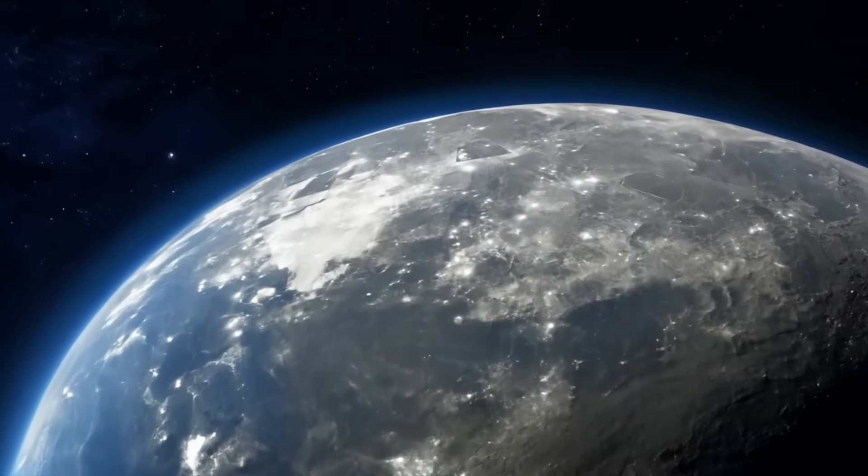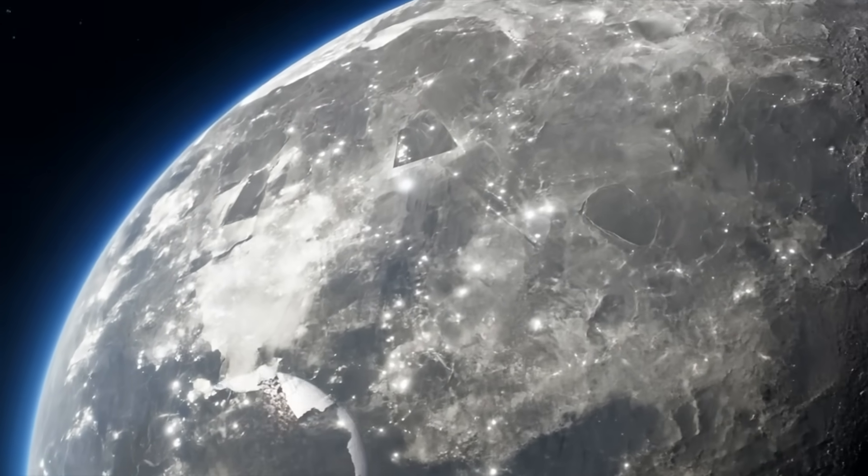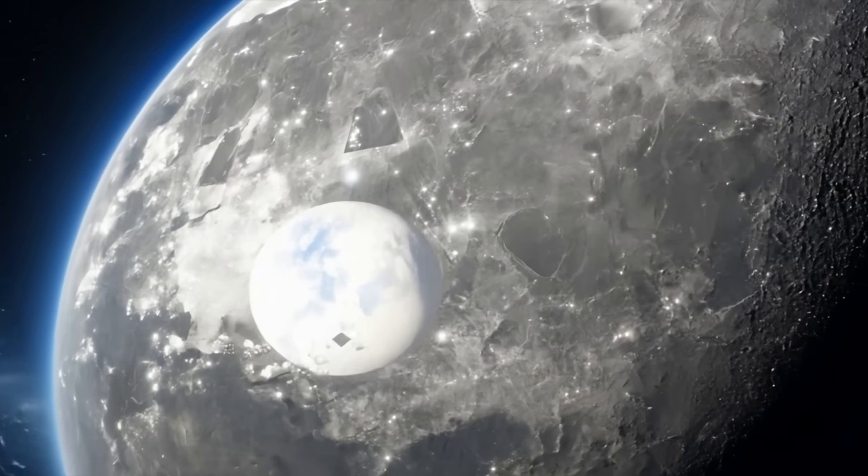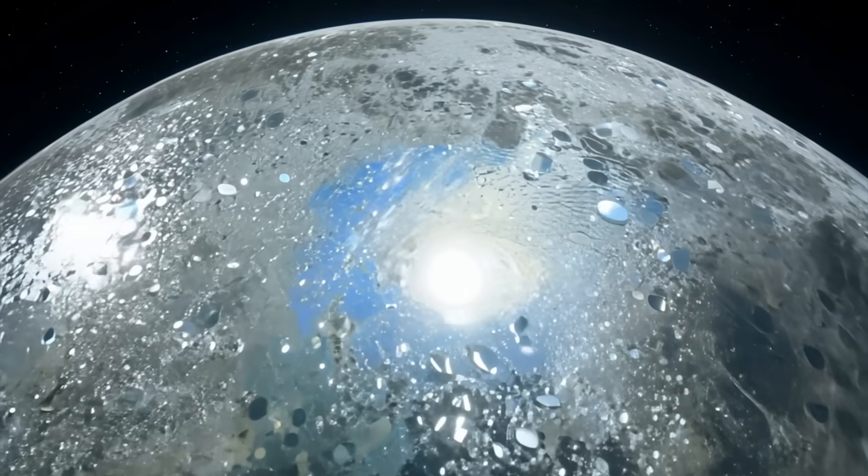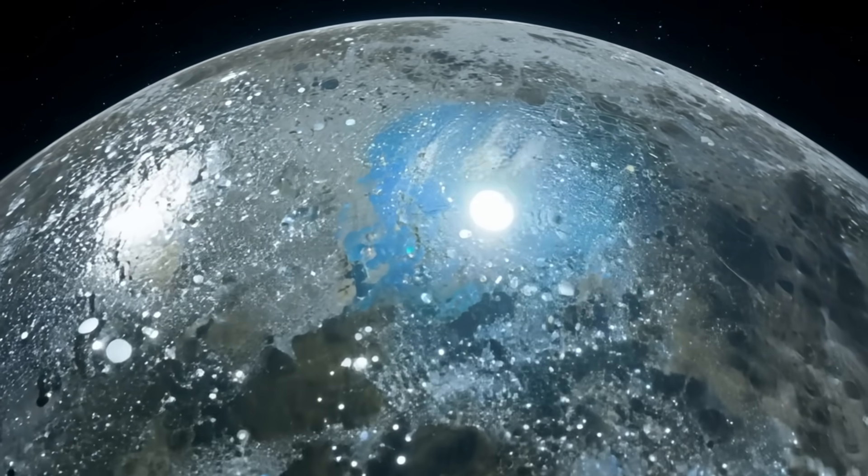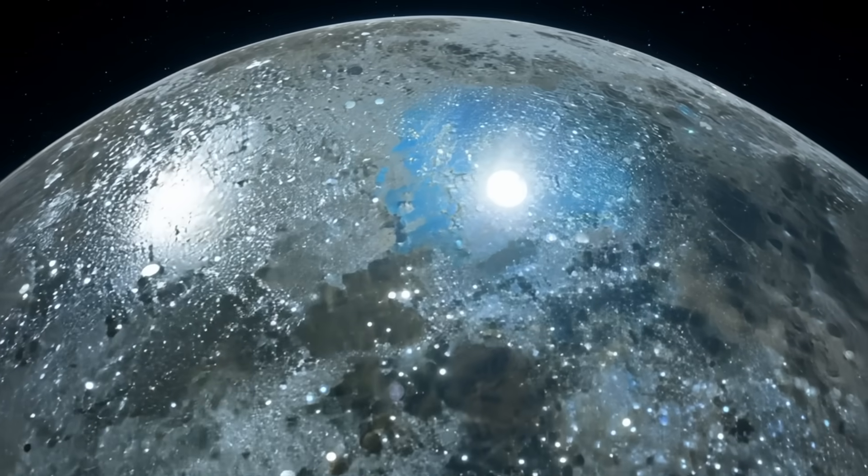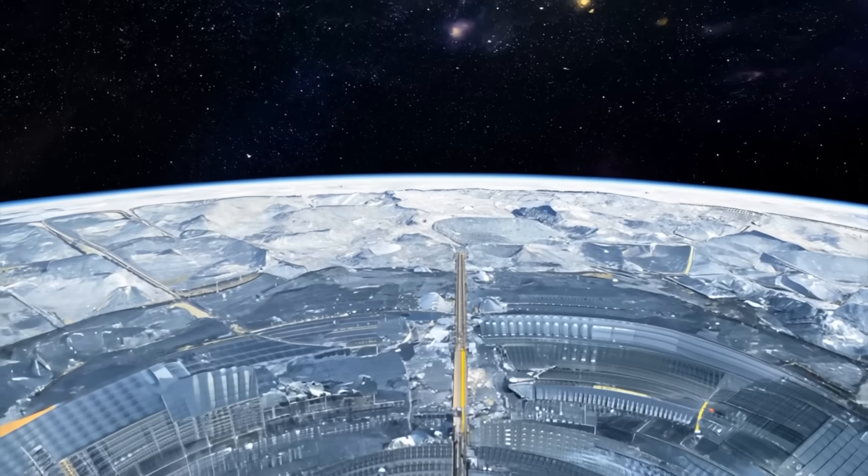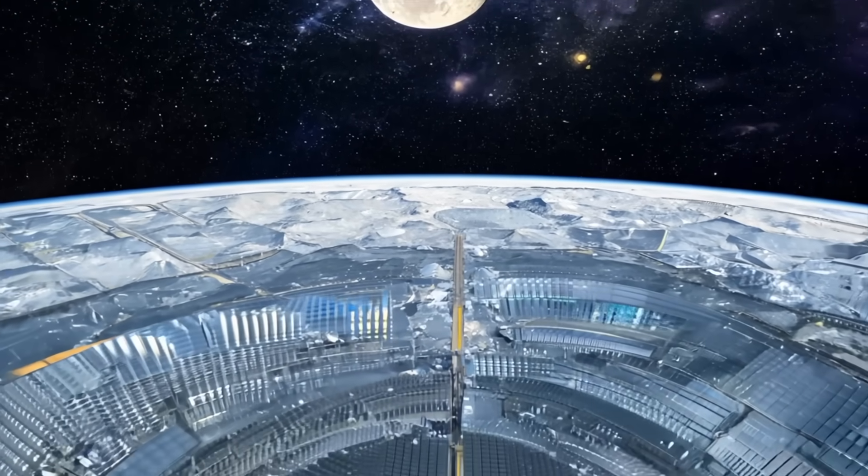At its heart is a massive, ground-based mirror array. This array is composed of hundreds of thousands of individual mirrors, each aligned to work as one cohesive unit. Together, they form a light-gathering surface that is over 93 kilometers wide.